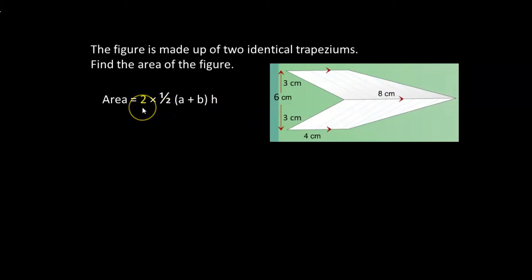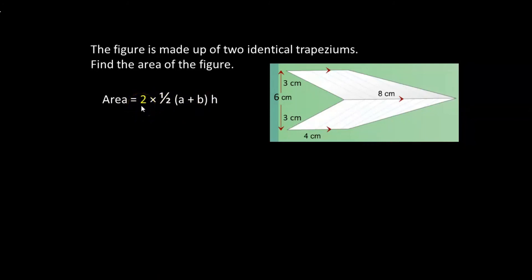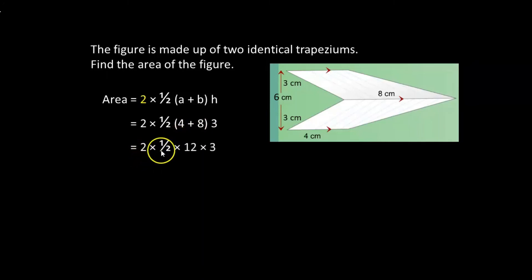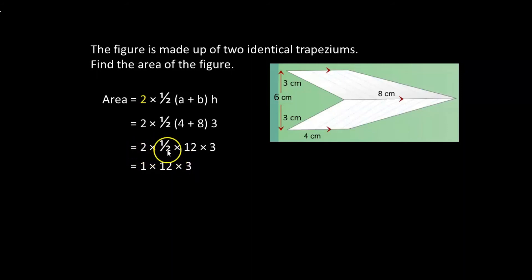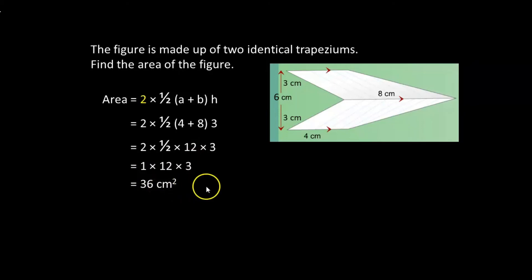Since I'm finding the area of one trapezium but there are two of them, I need to multiply everything by 2 — that's why the 2 is highlighted. Substituting the values: 2 times half times (4 plus 8) times 3. Adding first: 2 times half times 12 times 3. Simplifying, 2 times half gives 1, so we have 1 times 12 times 3, and finally 12 times 3 gives 36 square centimeters.